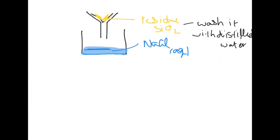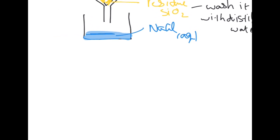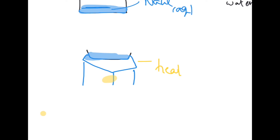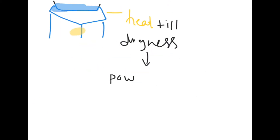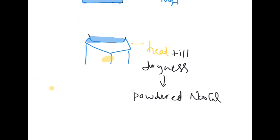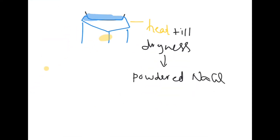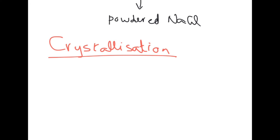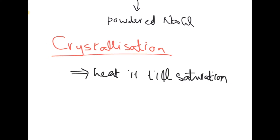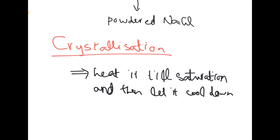For the filtrate — that is the sodium chloride solution — we take a china dish, put the solution in it, and heat it with a Bunsen burner. We heat it till dryness and we are left with powdered sodium chloride. To get crystals we carry out crystallization: we don't heat the solution till dryness; we heat it till saturation and then let it cool down.